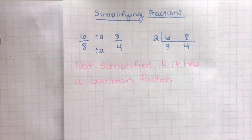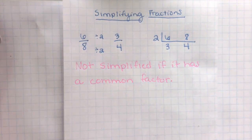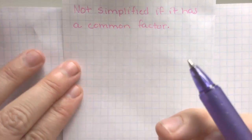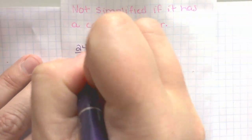Alright, so sometimes they're not this small, though. Sometimes we have some bigger numbers, and we're not sure how to simplify those. So let's do an example of a bigger one. So in here, let's do 24 over 36.